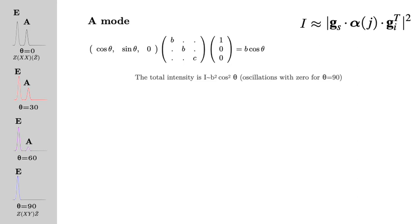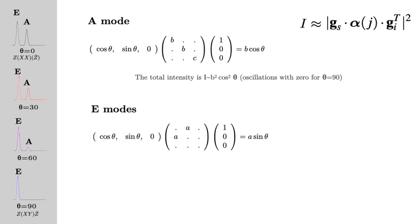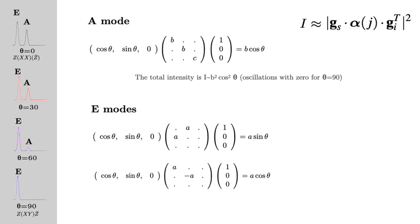Now, what about the E modes? Why are the E modes of constant intensity? Well, you have to realize you have two E modes. The first one has a Raman tensor which is not diagonal. With polarization (1,0,0) and Gs = (cos theta, sin theta, 0), when you solve this you get A·sin(theta). For the other E mode, given by its tensor, you find A·cos(theta). There is no interference between the modes — each mode has its own intensity. So the intensity of the first mode is A²·sin²(theta), and the second is A²·cos²(theta). The sum of the two is A²·(cos²theta + sin²theta), which of course is a constant. So this is how you understand the polarization effect.